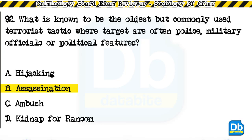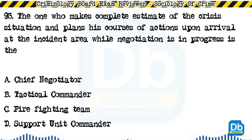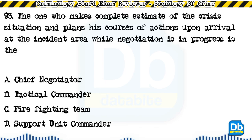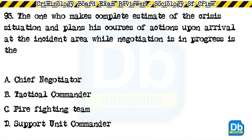Question 93: The one who makes a complete estimate of the crisis situation and plans courses of action upon arrival at the incident area while negotiation is in progress is: a) chief negotiator, b) tactical commander, c) firefighting team, d) support unit commander. The answer is B, tactical commander.